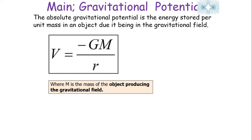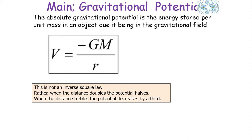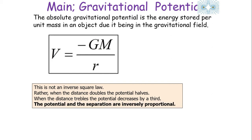R is the separation between the two objects — note this is not the inverse square law; it's not R squared, it's just R. So when the distance between the two objects doubles, the potential halves. When the distance triples, the potential decreases by a third. So the potential and separation are inversely proportional.